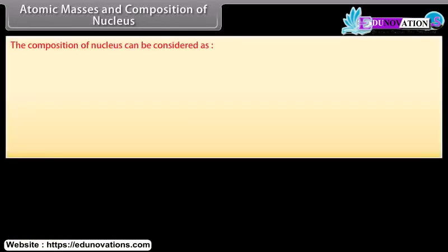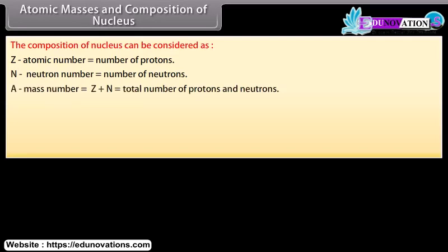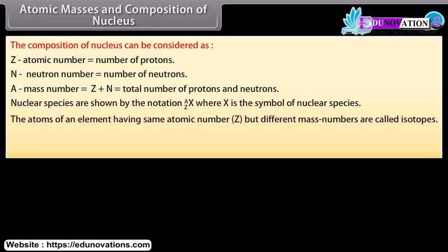The composition of nucleus: Let Z be the atomic number, equal to the number of protons. Let N be the neutron number, equal to the number of neutrons. Let A be the mass number, equal to Z plus N, which is the total number of protons and neutrons. Nuclear species are shown by notation where X is the symbol of the nuclear species. Atoms of an element having the same atomic number Z but different mass numbers are called isotopes.